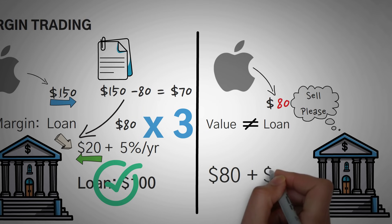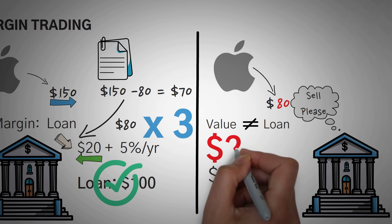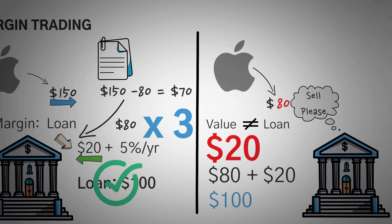So the $80 you made from selling the stock plus the $20 that you gave them as a down payment equalizes the loan. And now the bank has their original $100 they originally gave you. So you're free and clear you've paid your loan back, but you didn't profit anything. In fact, you lost your original $20 that you put up as down payment.